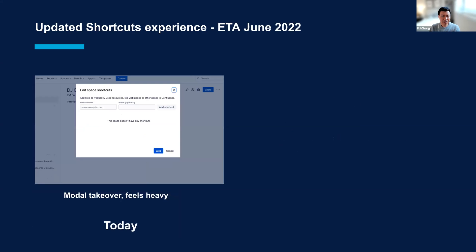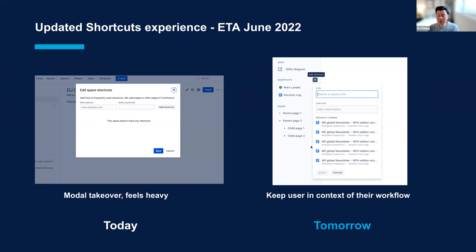So what are we doing here? This experience feels a little outdated and we're going to update it with a new link picker. Instead of taking you out of context and showing a modal when you want to add a shortcut, we'll show you this link picker inline. You'll be able to paste any link or search Confluence across your instance to find a page. You can add link text and, as a handy view, we'll populate it with recently viewed pages so you can quickly find the page you want to add as a shortcut.